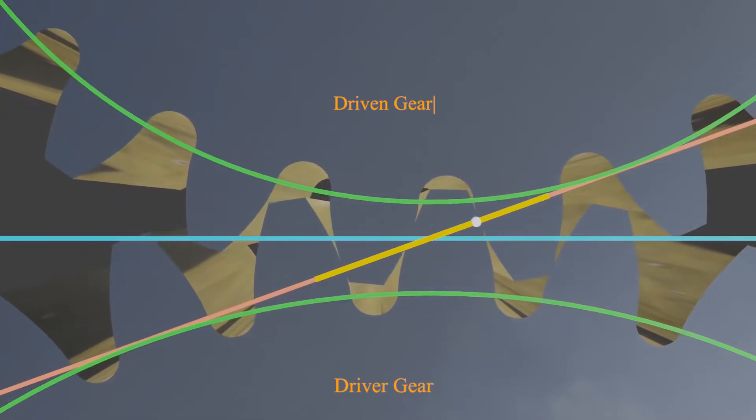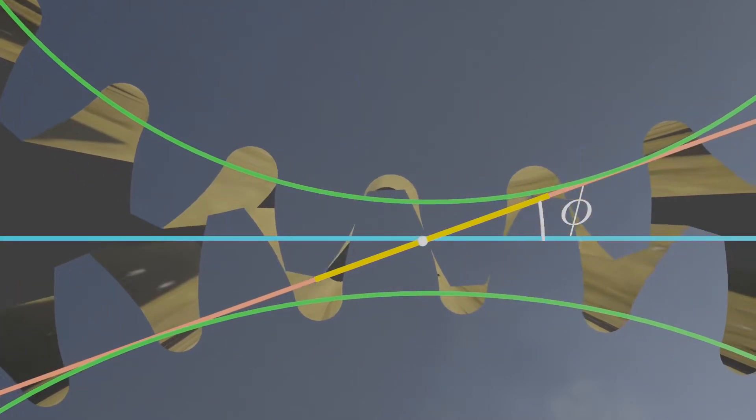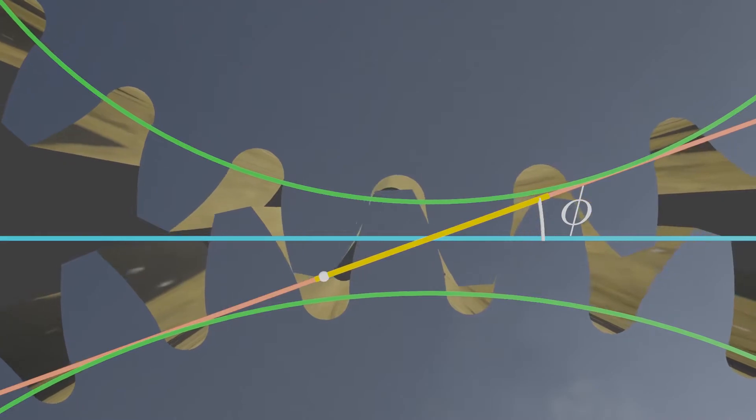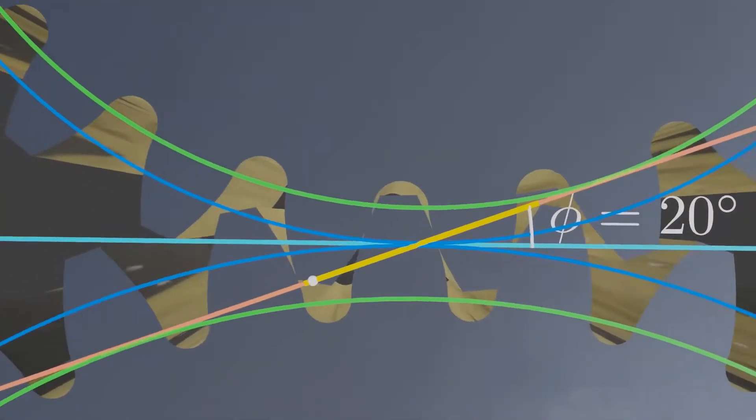The pressure angle is the angle between the tangent to the pitch circles and the line of action. These gear sets are designed with 20 degree pressure angle.